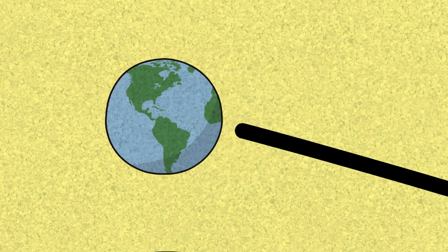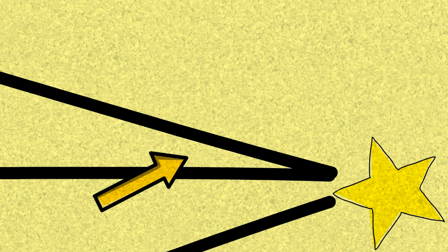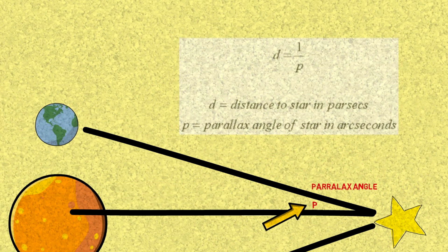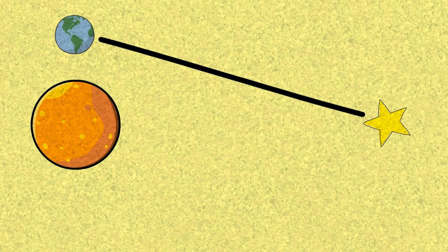So a parsec is a unit used to measure the distance to a far star. To measure it, we say the distance to that star in parsecs is one divided by that angle in arcseconds. So if a star is so far that the angle only changes by half an arcsecond — which is a very small angle — when the Earth moves from one side of the sun to the other, then the distance to that star would be one divided by that small angle, half an arcsecond. And that is about what a parsec really is.